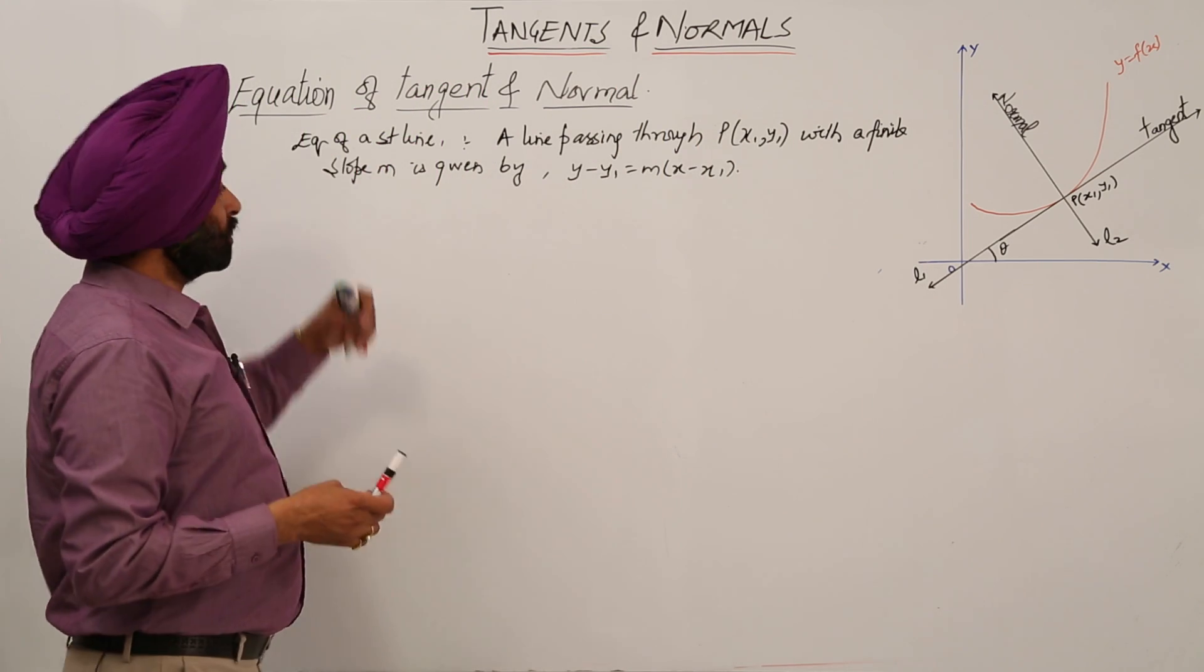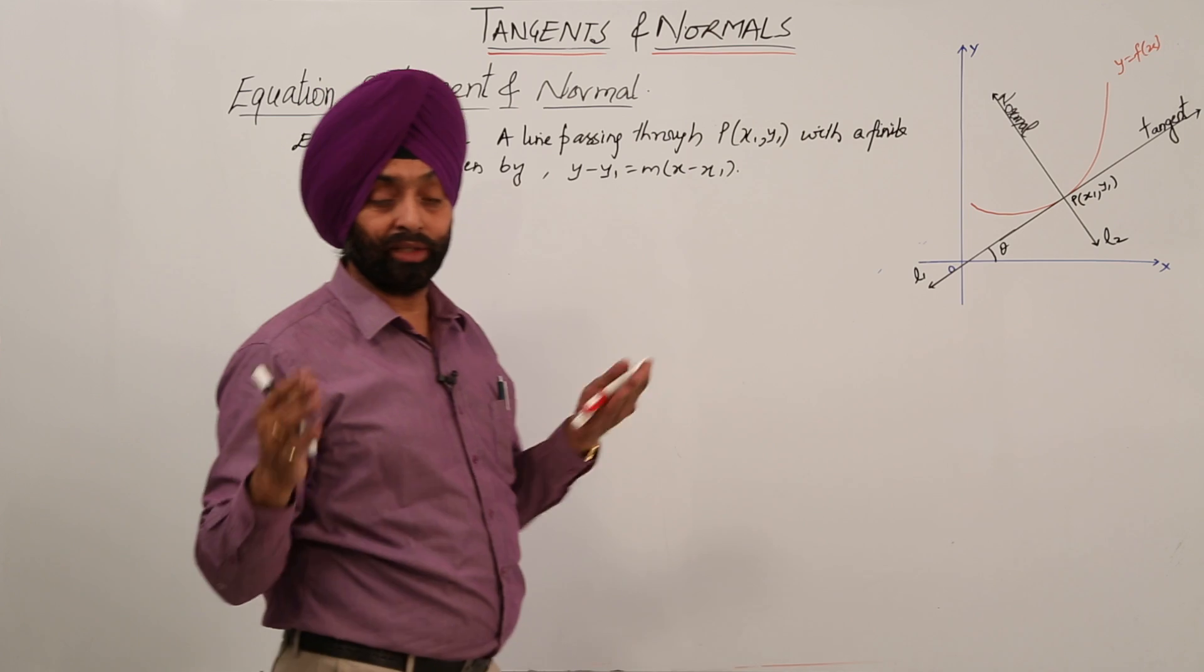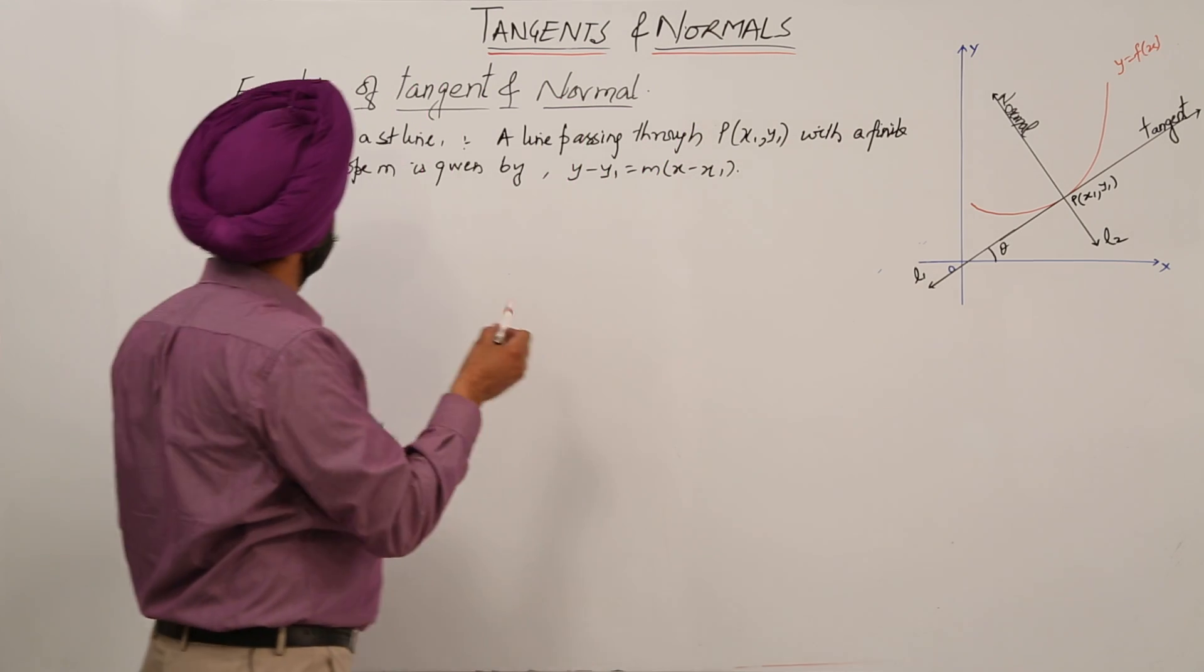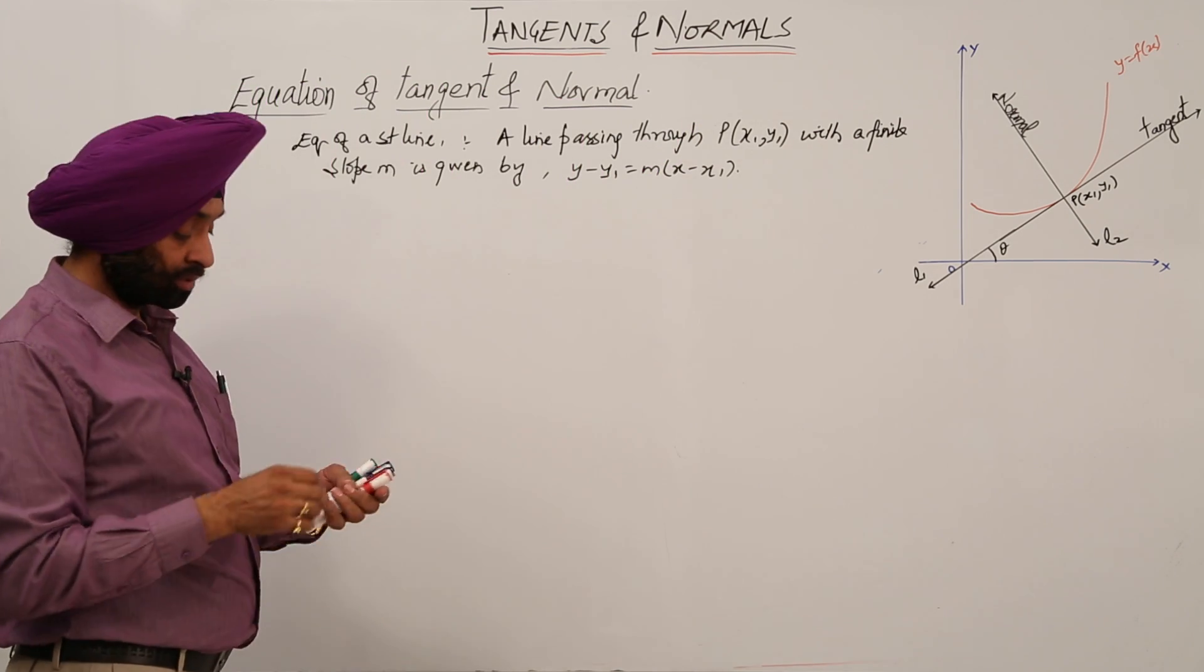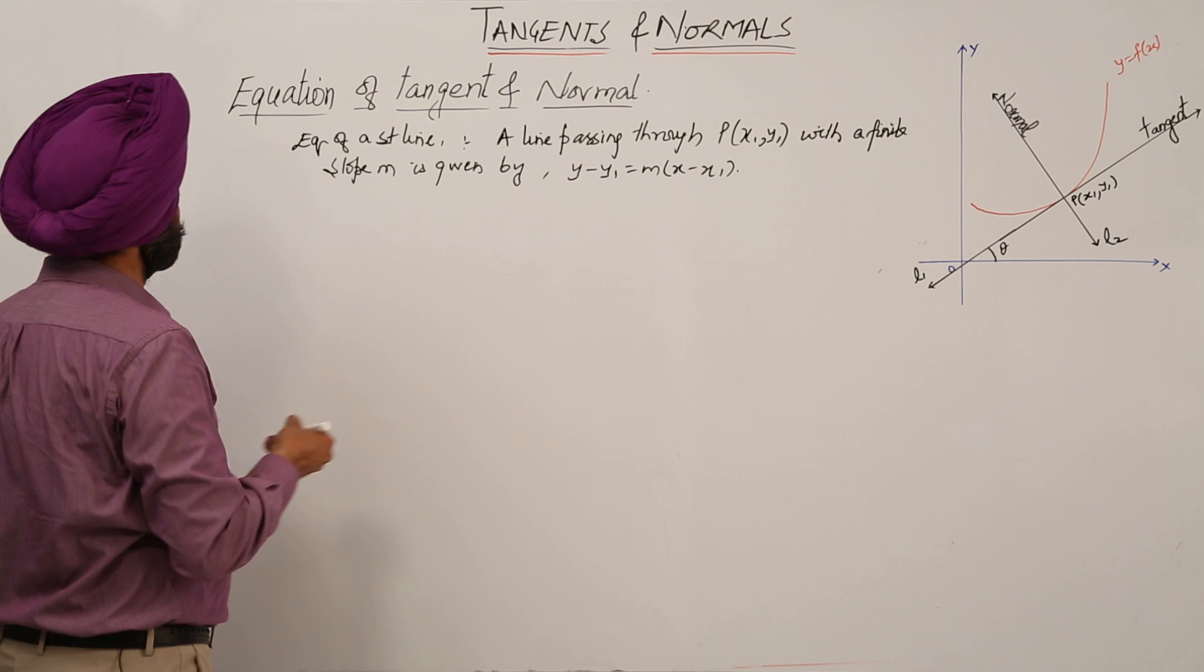The same thing applies here. Equation of a straight line means equation of a tangent. Tangent is also a straight line, but what is the slope in the tangent? We have already discussed that.